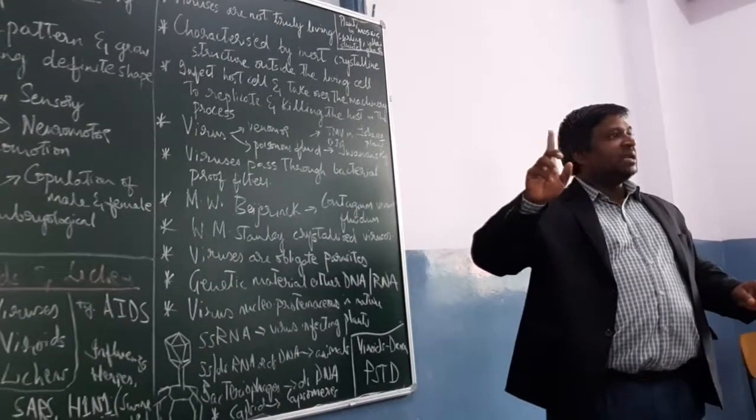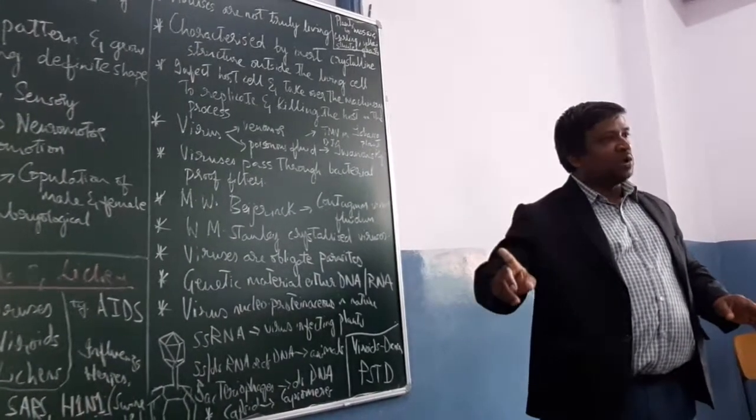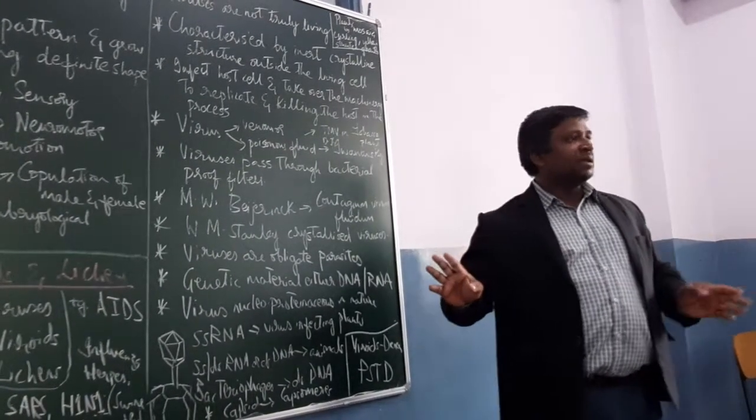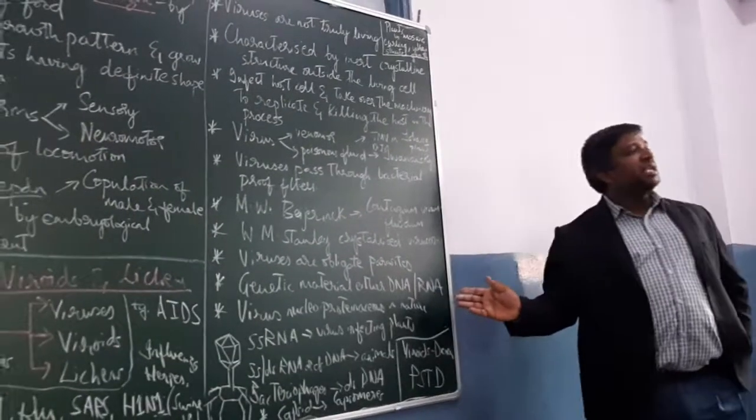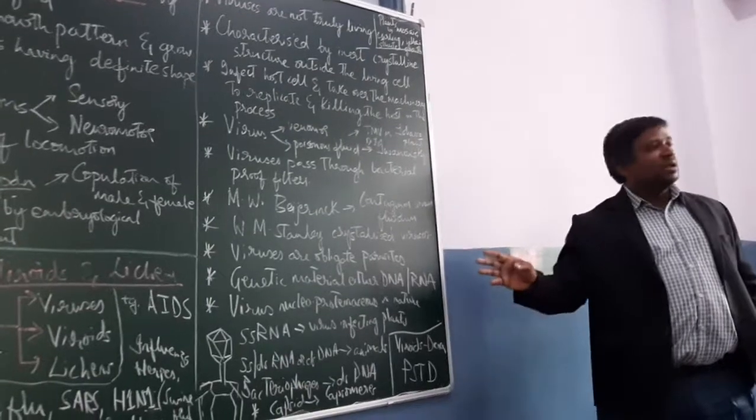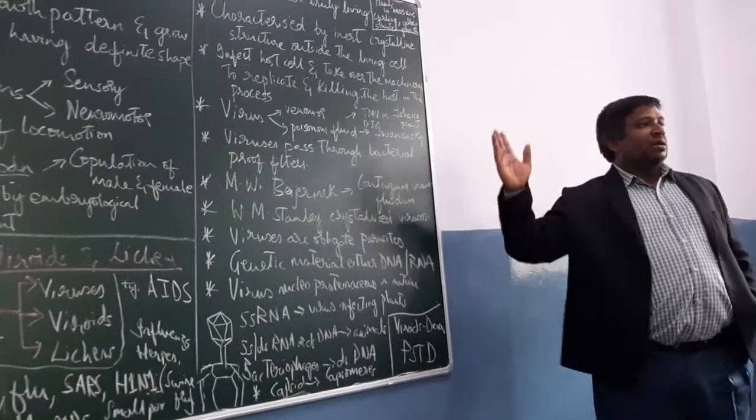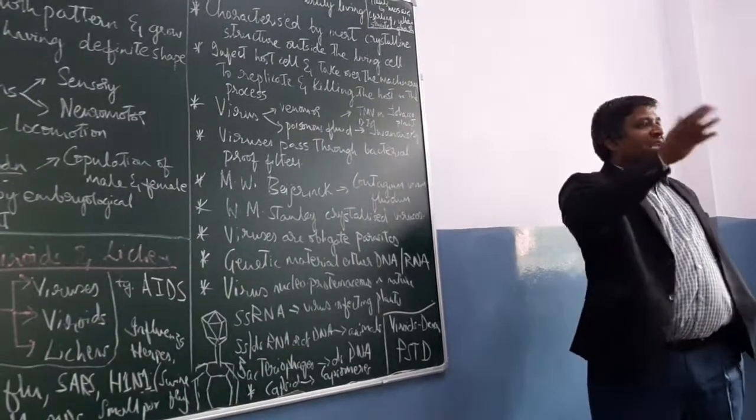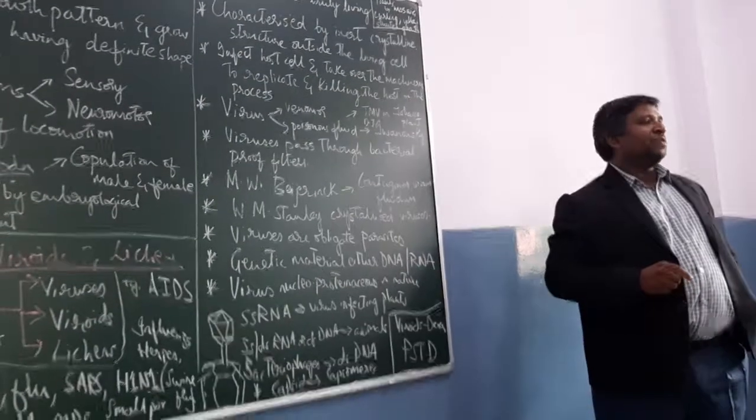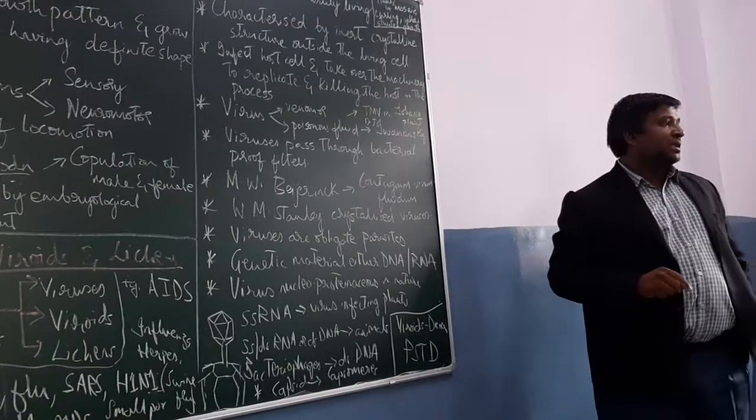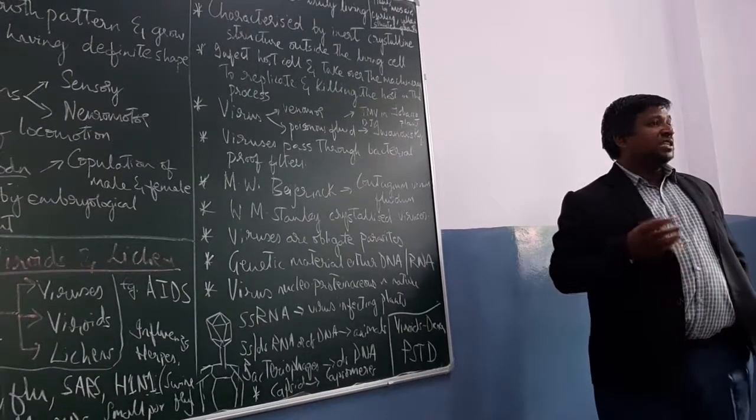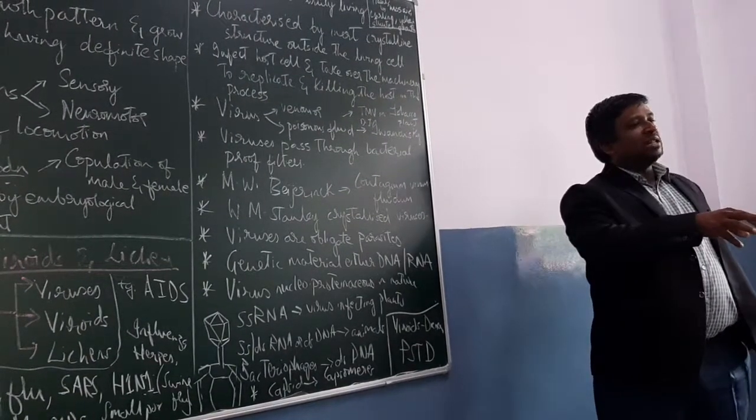Obligate parasites. Genetic material can be either RNA or DNA. Tobacco mosaic virus is an RNA virus. SRV sarcoma Rous virus is also an RNA virus. Bacteriophages are viruses which infect bacteria.